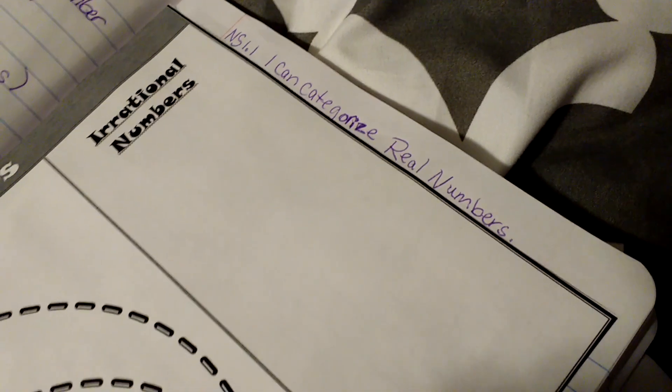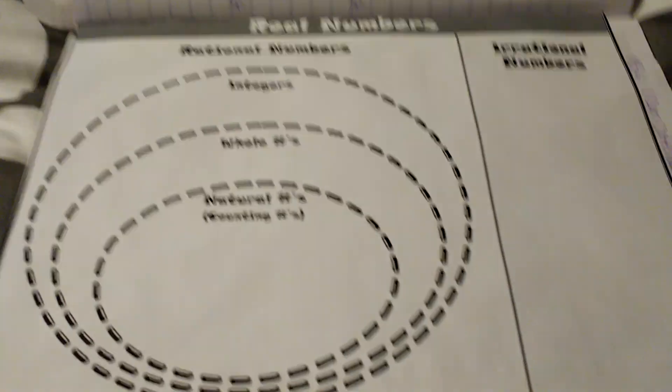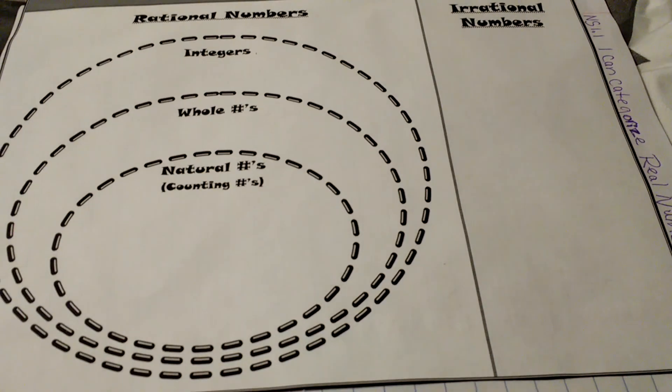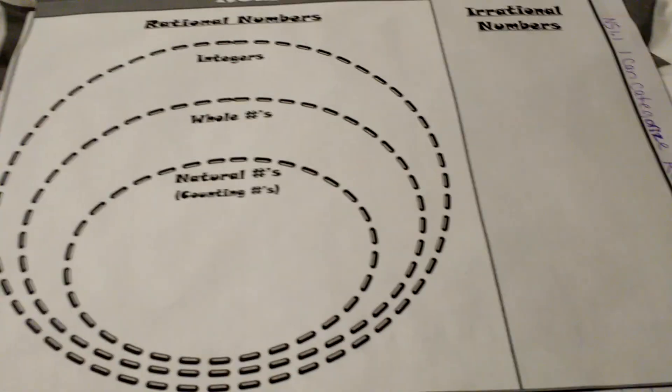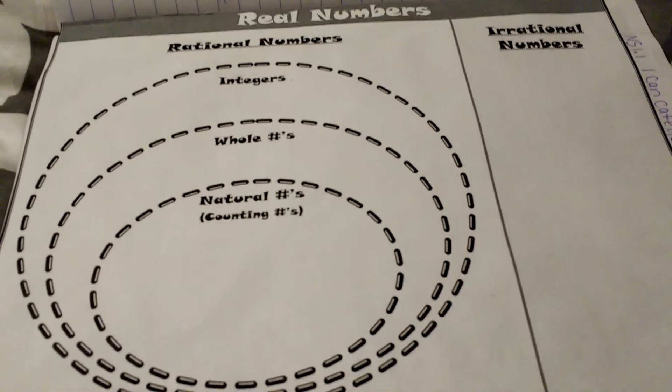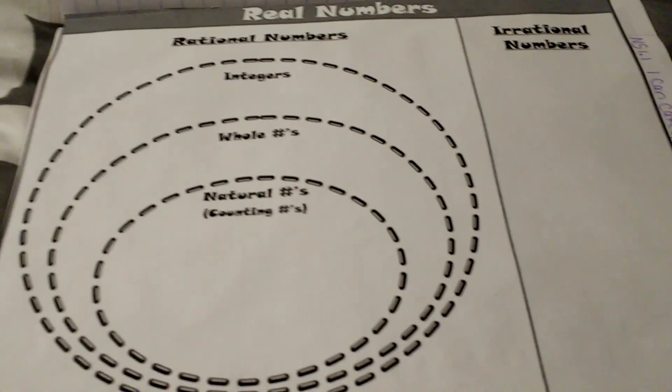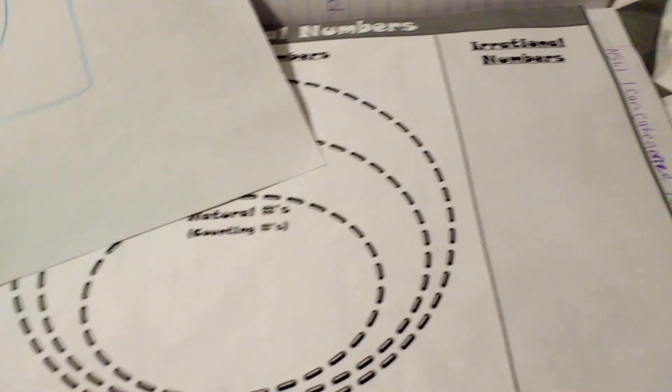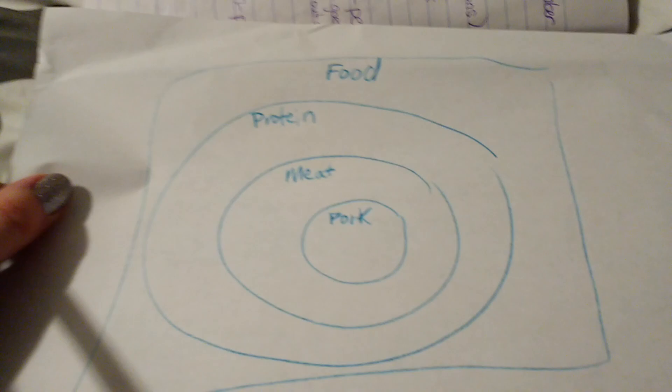In NS 1.1 I can categorize real numbers, and you have this real number sheet in your notes. Before we actually talk about rational and irrational numbers, integers, whole numbers, and natural numbers, I want you to understand the way the chart works.